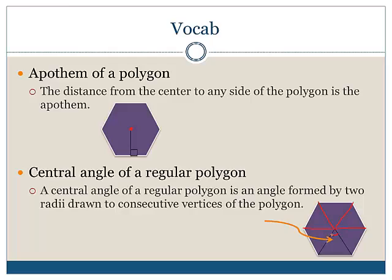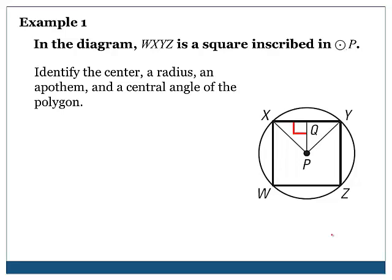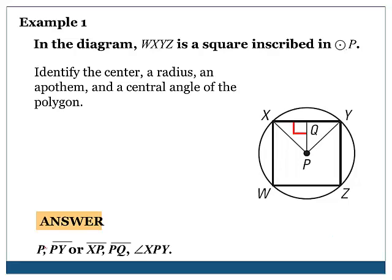In the diagram, WXYZ is a square inscribed in a circle with center P. Identify the center, a radius, an apothem, and a central angle of the polygon. The center is P. The radii — you could choose either PY or XP. The apothem is the line that creates a right angle, which is PQ. And the central angle is angle XPY.